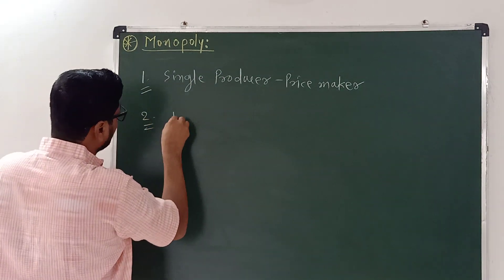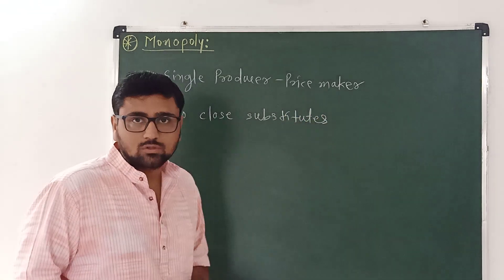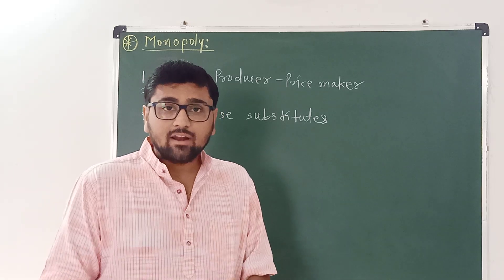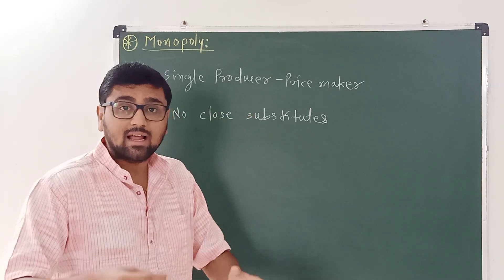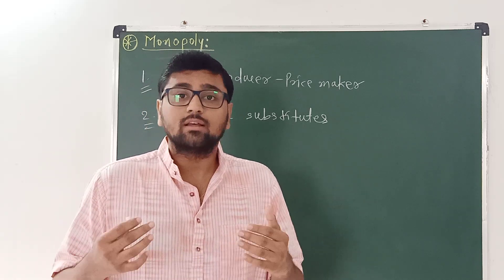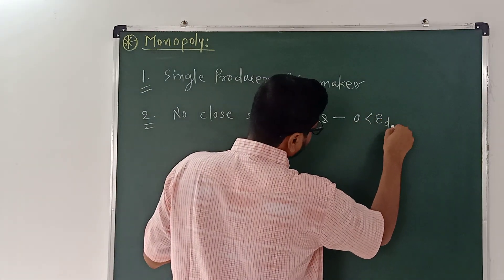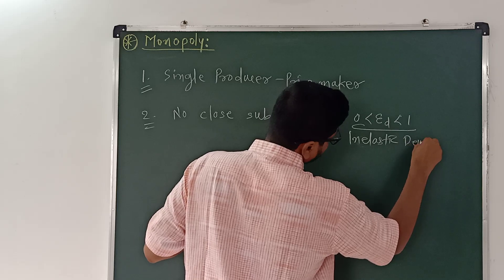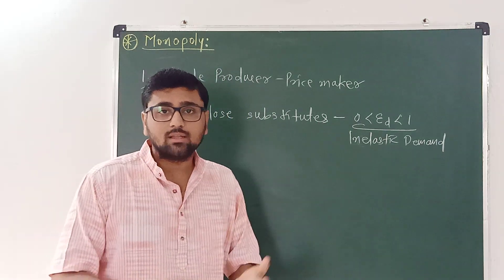Second is no close substitutes. There are no other firms in the market selling close substitutes to consumers. Therefore, the demand curve that this producer faces is downward sloping, and the elasticity of demand is between 0 and 1, which means demand is highly inelastic because consumers do not have any other option in the market. So if there is no close substitute, the elasticity of demand is between 0 and 1 — that is inelastic demand. Because of these two causes, the monopoly arises.